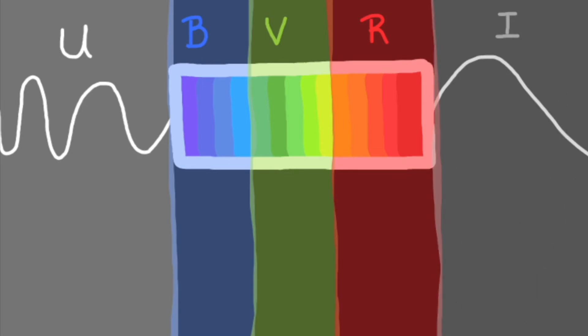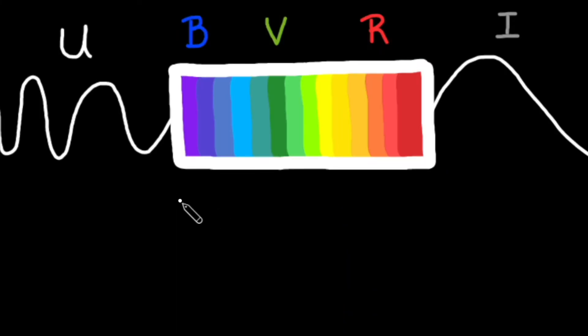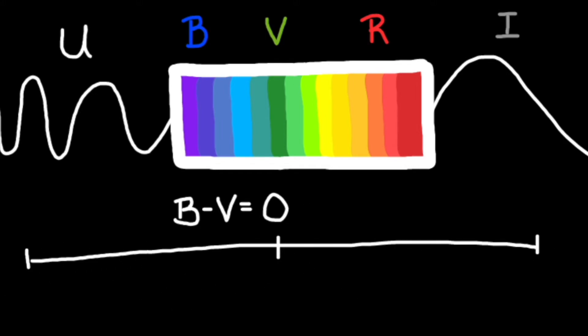When we talk about the color of a star, we usually refer to how the star appears in one filter compared to another filter. That is to say, we talk about the difference between two filters. The star Vega has a B minus V value of 0.0. Because of this, Vega is often used as a baseline for magnitude comparisons.